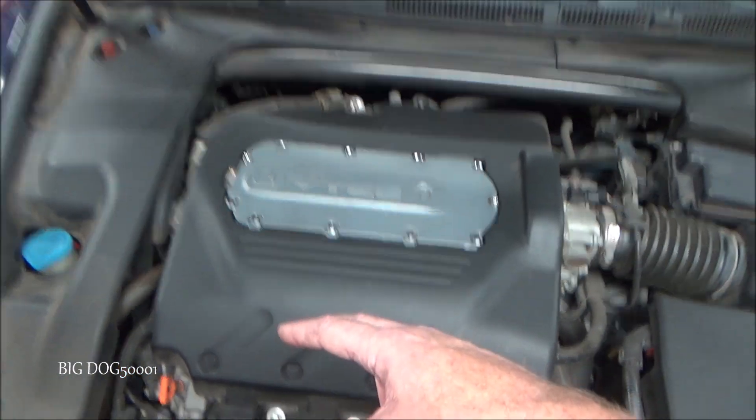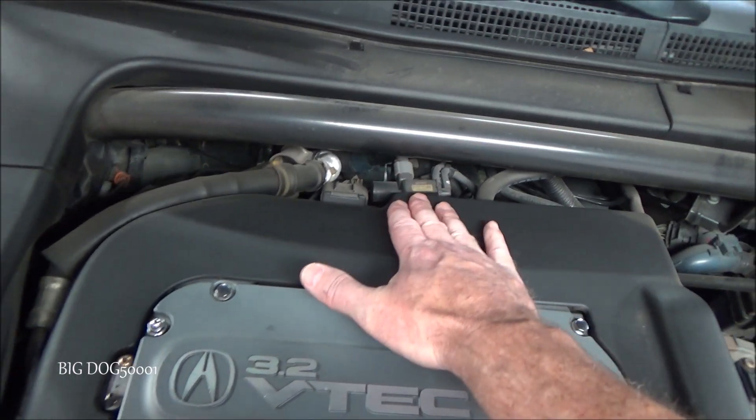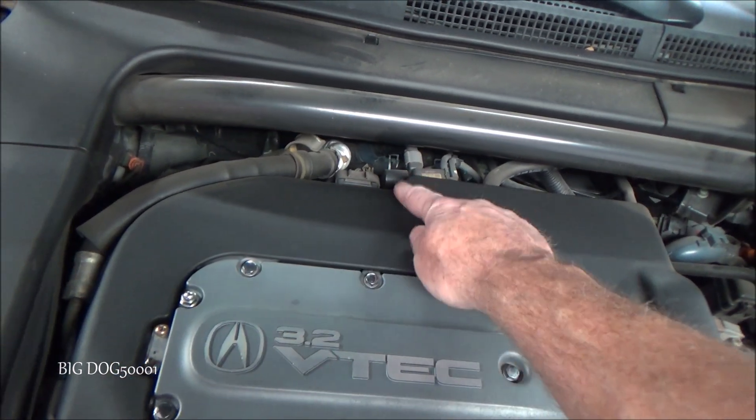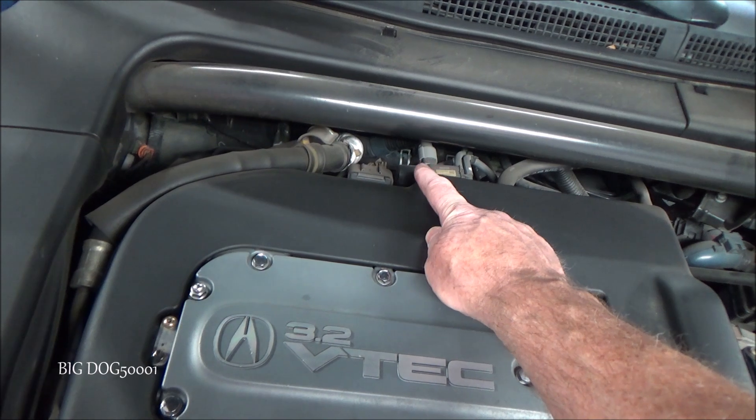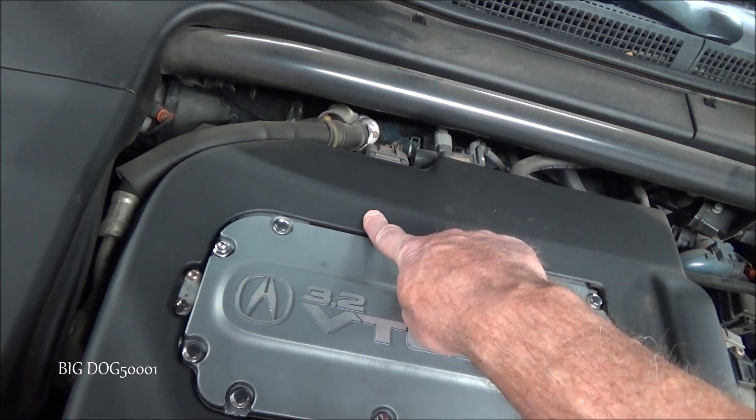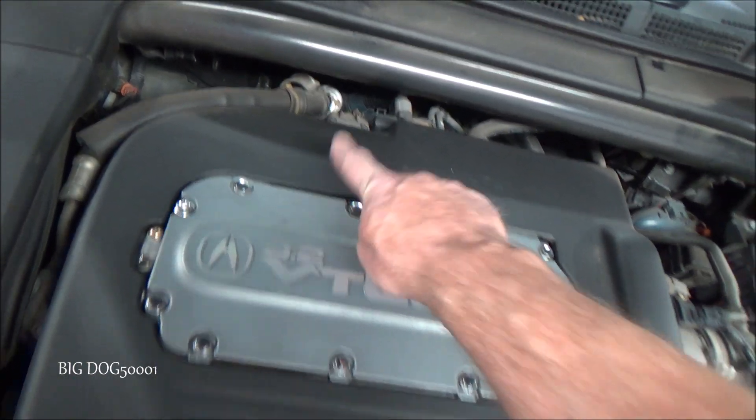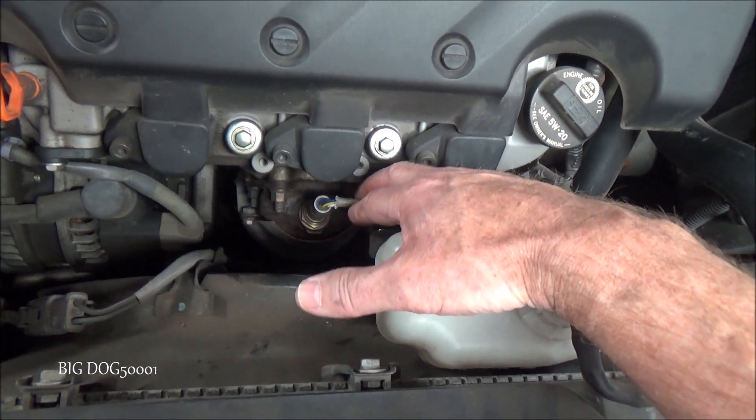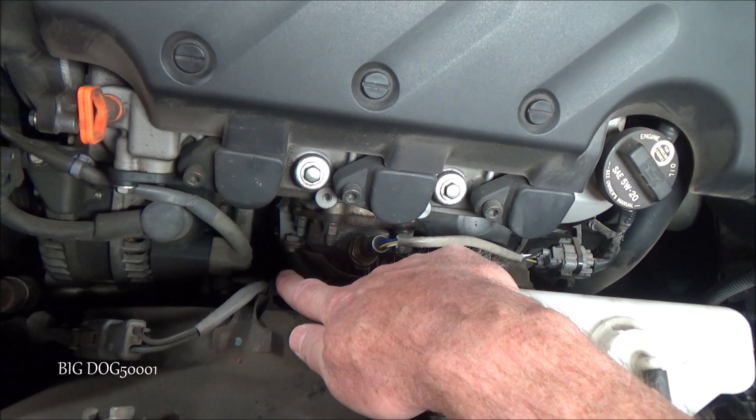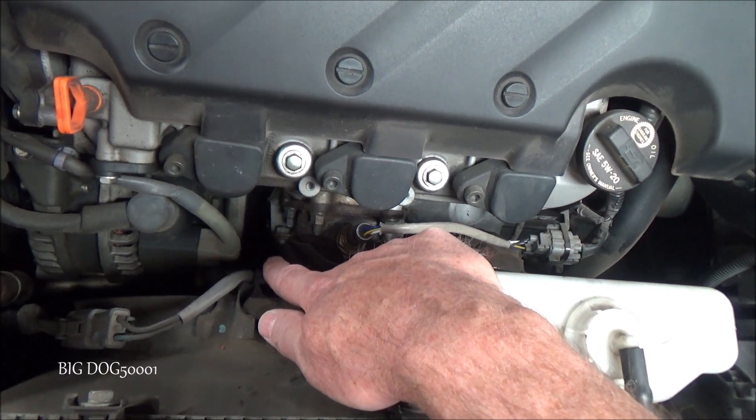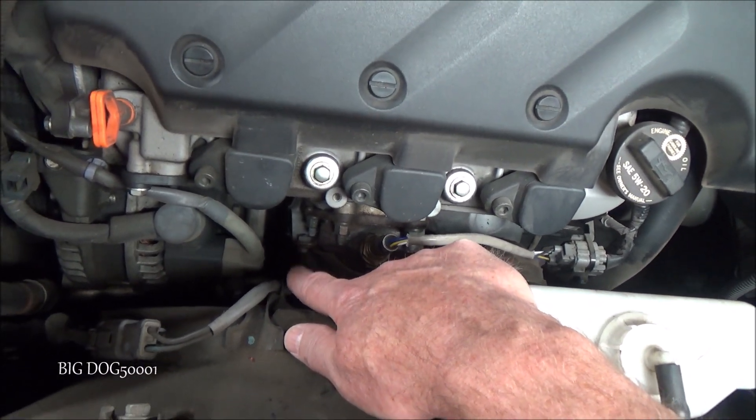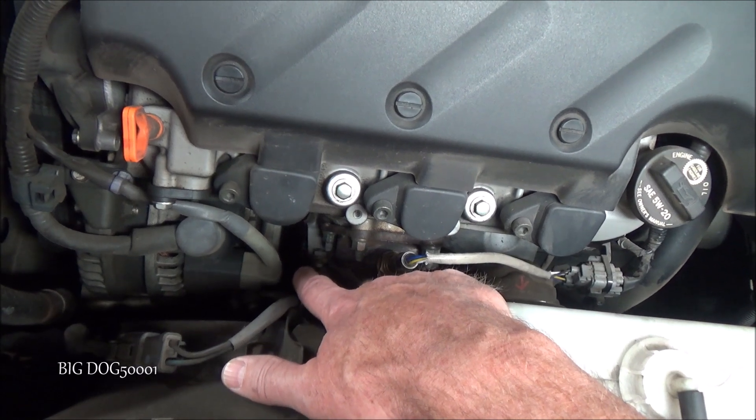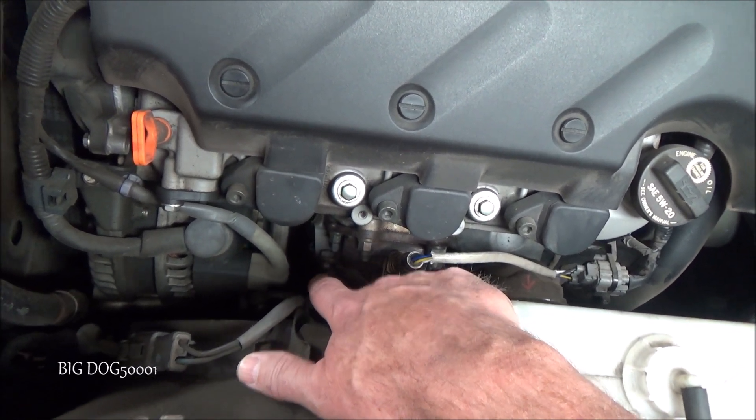So on each side, we have bank one sensor one, which would be our air fuel ratio sensor over here. And then bank one sensor two would be the oxygen sensor after the catalytic converter. Over here on bank two, this would be bank two sensor one. And down at the bottom is bank two sensor two. And if I remember correctly, bank two sensor two, our oxygen sensor down there is what the computer was saying we have a slow response.